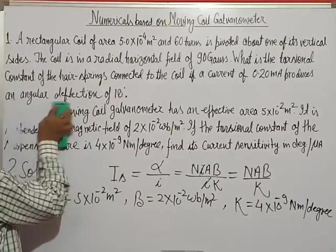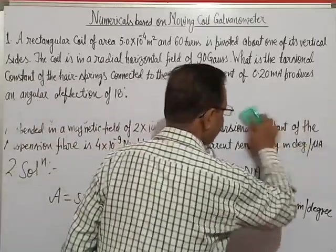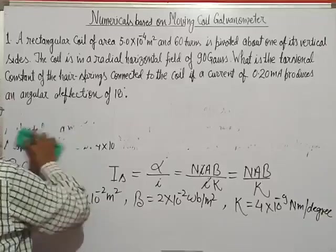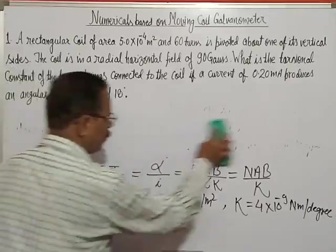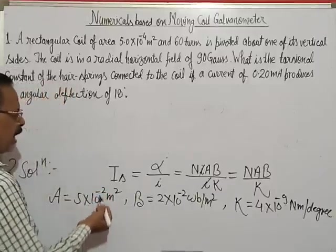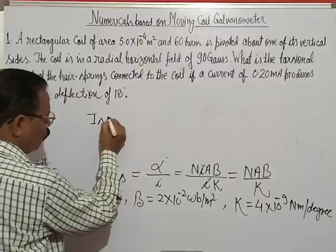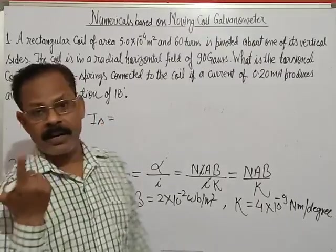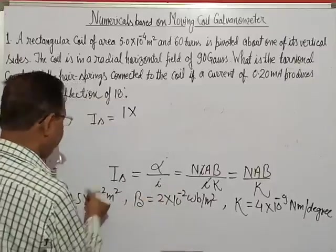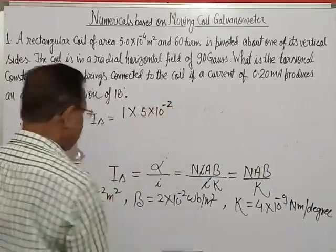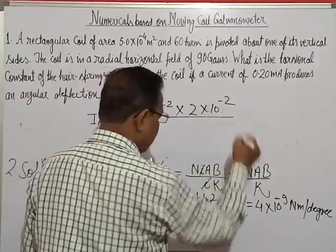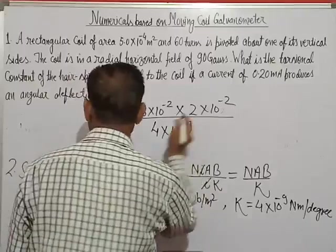अब substitute करेंगे। हमें current sensitivity निकालनी थी। IS equal to N — N कितना दिया था? Question में N नहीं दिया हुआ था, तो N assume किया रखेंगे 1 (number of turns = 1)। Area कितना दिया हुआ है? 5×10⁻² — area हो गया। B कितना दिया हुआ है? 2×10⁻², upon K कितना दिया है? 4×10⁻⁹। पहले इतना नोट करें।